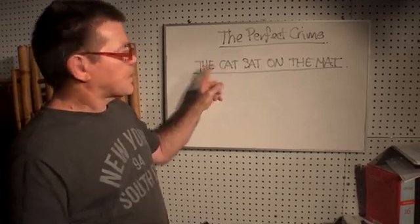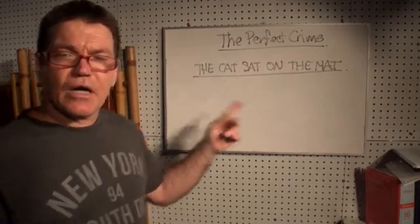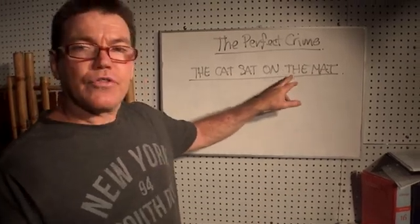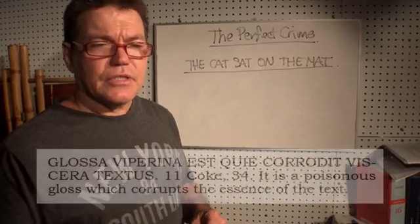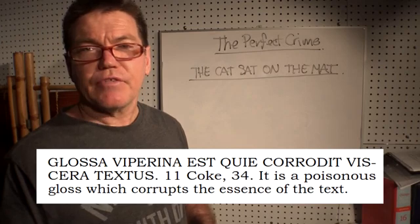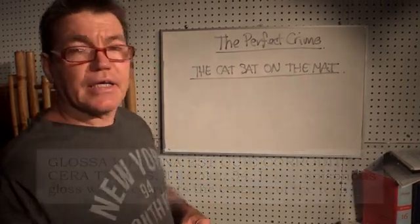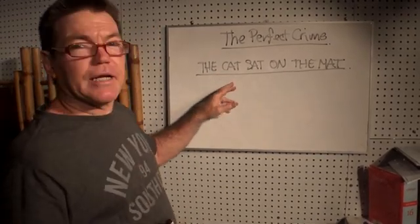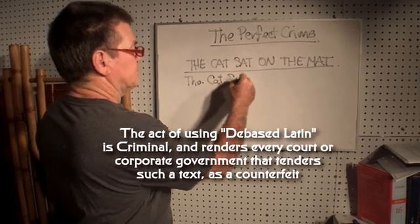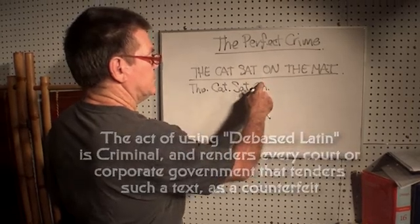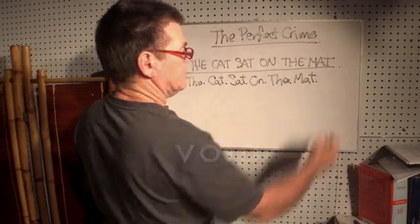Most of us will read that as 'the cat sat on the mat.' But that's a lie, and the only way you can detect that it's a lie is by knowing the grammatical truth of that type of text. That's called a glosser, but in Black's Law Dictionary it's a corrupt gloss that corrupts the essence of the text — which is the meaning of the text. We would assume it reads 'the cat sat on the mat,' but in actual fact it doesn't read that at all, because when this typeface is translated back to English, it reads something different. That's what it reads.